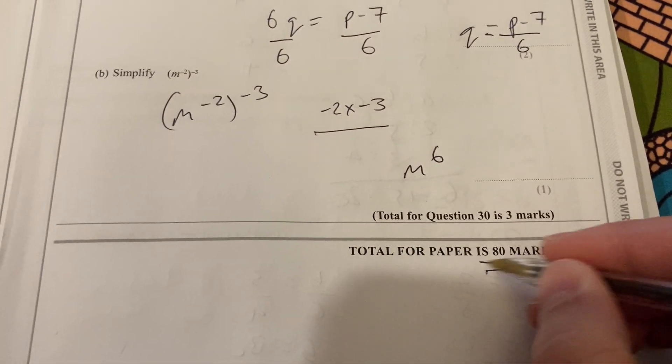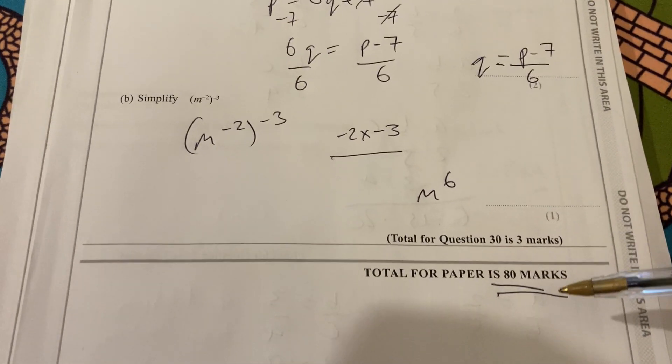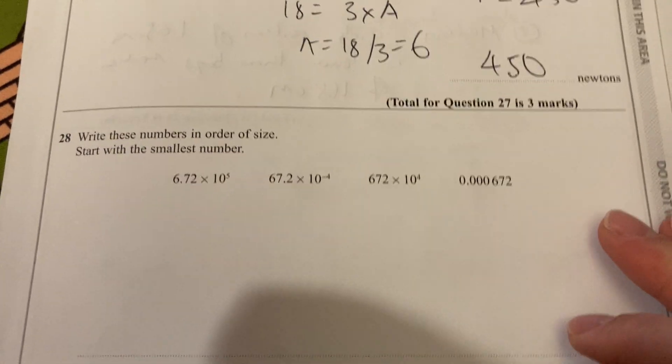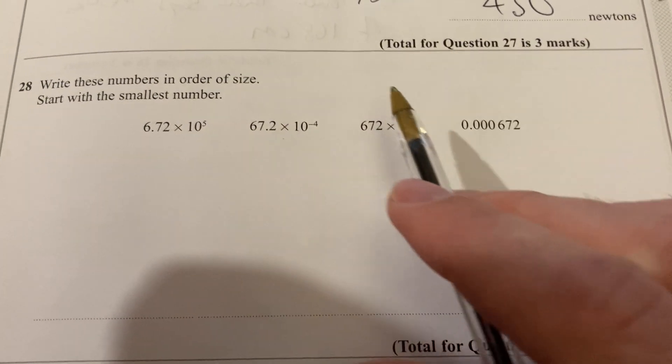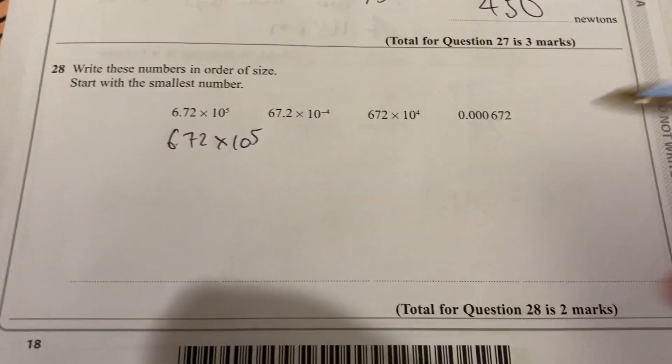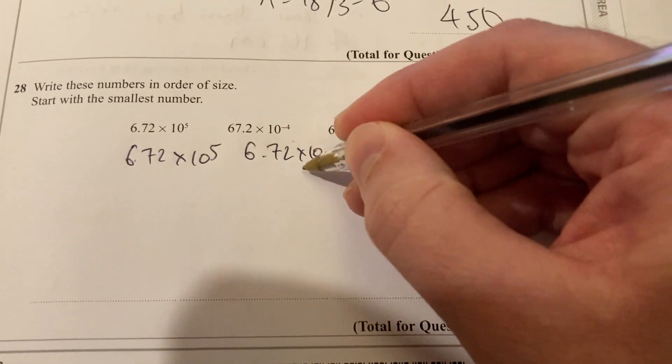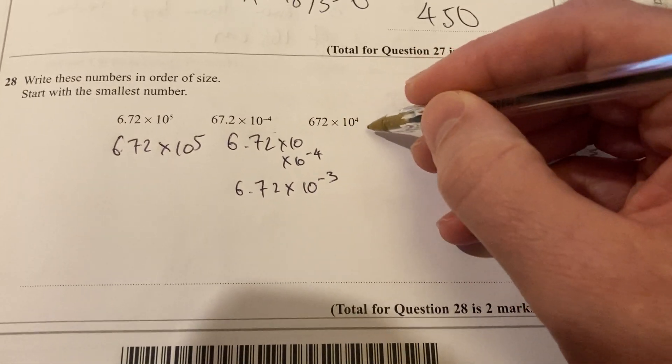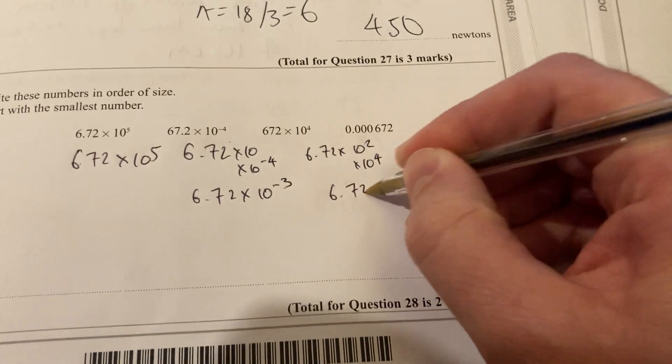Okay. It says your total for paper is 80 marks, so you know that. Statement says you come to the end of the paper. Do watch the other two videos. If you want to go back to earlier questions, one thing to do when you finish the paper, always go back and check your answers. And in this case, I'd go back and I'd notice that I'd skipped question 28. So let's do 28 now. And we've got to write these numbers in order of size, starting with the smallest number. Now this one is in standard form. 67.2 is 6.72 times 10 to the minus 4, so 6.72 times 10 to the minus 3. Then that's 672, which is 6.72 times 10 squared times 10 to the 4. That's 6.72 times 10 to the 6.